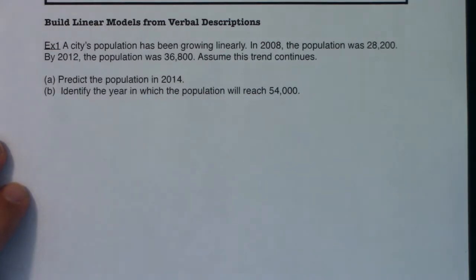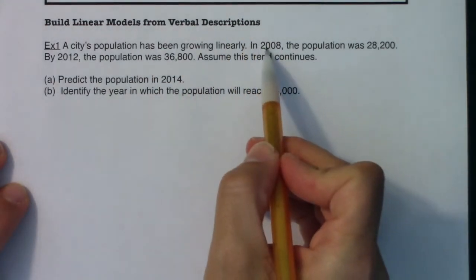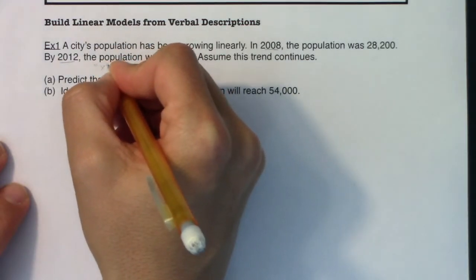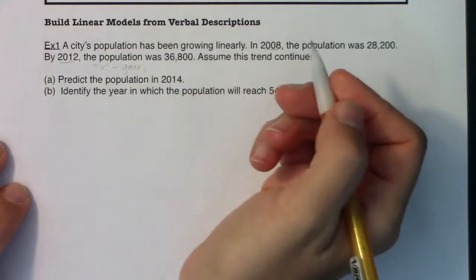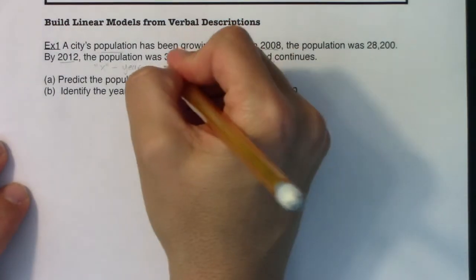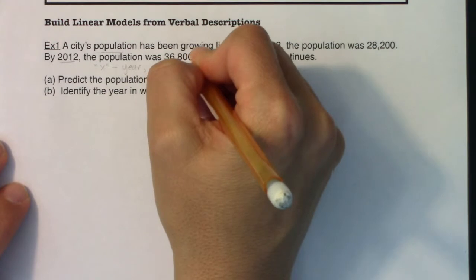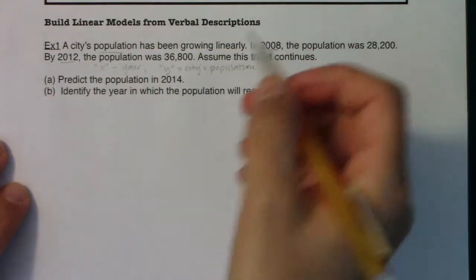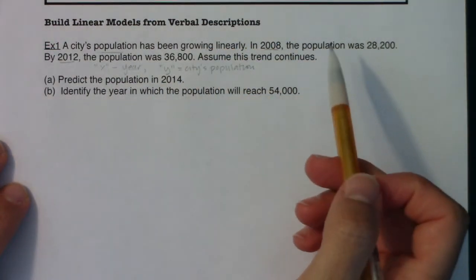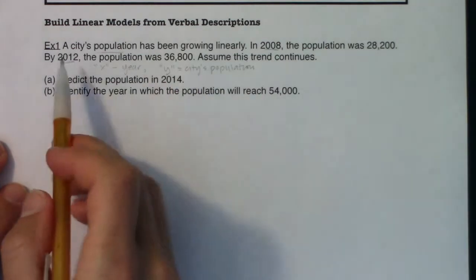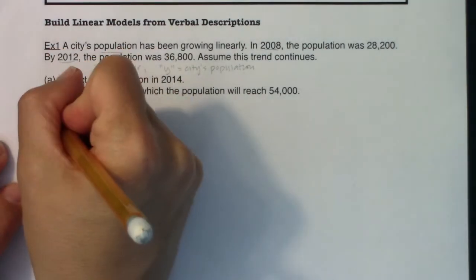Alright, so let's take a step back and let's see if we can identify the variables here. What is varying in this problem? And one thing I can see varying is time. I see two time values. So that's most likely going to be my x variable. Year. Now, based on what year it is, I can see that there's a city's population is growing. So my y variable here is the city's population. So here's my x, here's my y, and I heard two ordered pairs in here. I heard the ordered pair, 2008, and then 28,200, as well as 2012, 36,800. So let me go ahead and write those down.